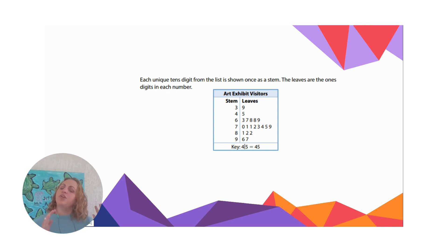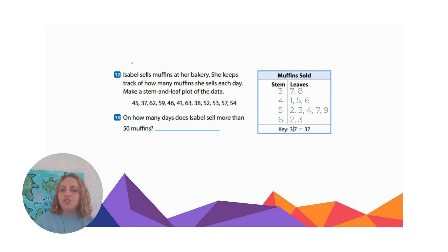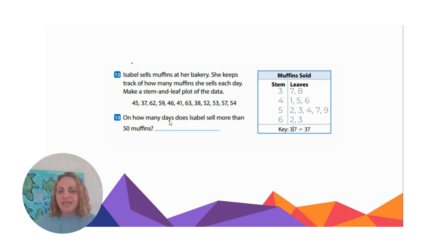They're a little bit trickier and more confusing, but the more you practice the better you'll get. Let's look at another one — Isabel's Bakery. Isabel sells muffins and keeps track of how many she sells each day. She made a stem and leaf plot with the data. The stem is tens, the leaves are ones. So three-line-seven equals 37. How many days does Isabel sell more than 50 muffins?